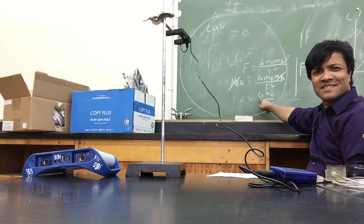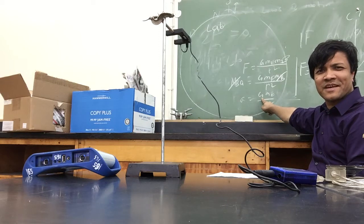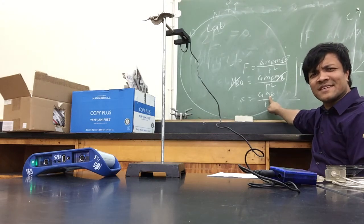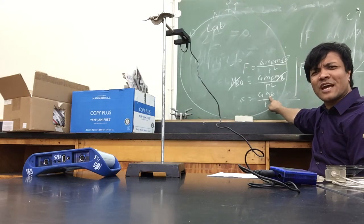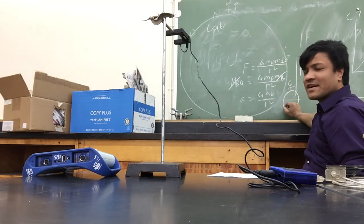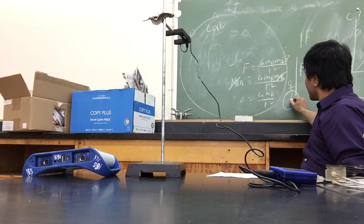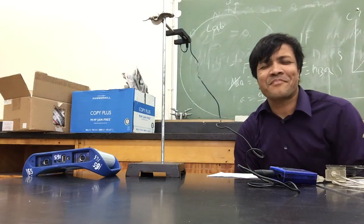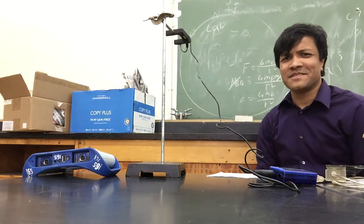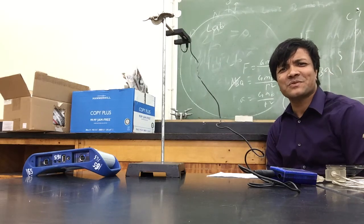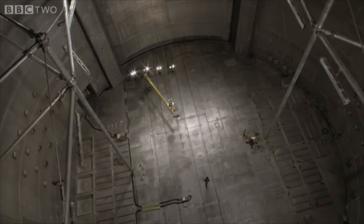G is the gravitational constant, which is 6.67 times 10 to the negative 11 — a very small number. M is the mass of the Earth, which is approximately 5 times 10 to the 24 kilograms. And this is the radius of the Earth, which is 6 times 10 to the 6 metres. If you calculate that, it would be 9.81 — that's the acceleration due to gravity. Isaac Newton would say that the ball and the feather fall because there is a force pulling them down: gravity.